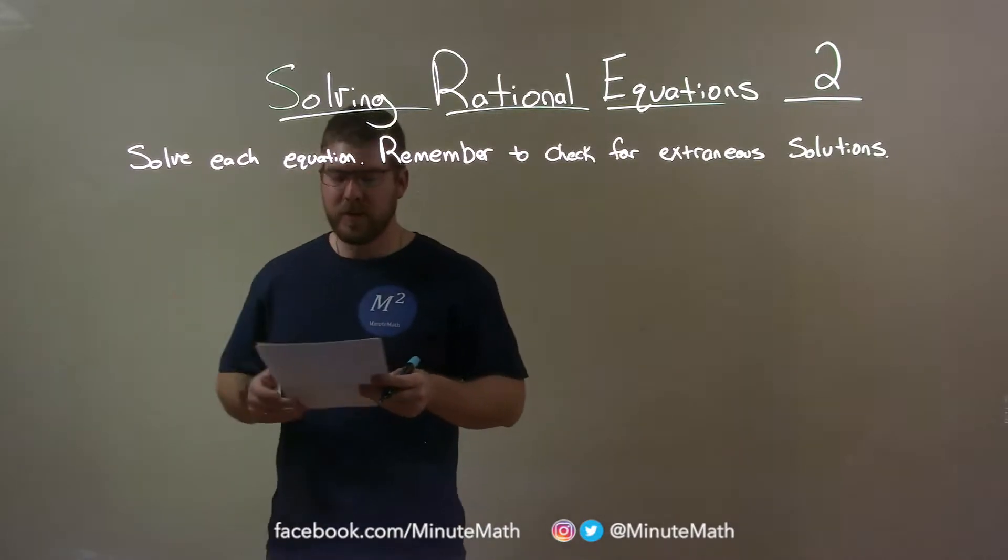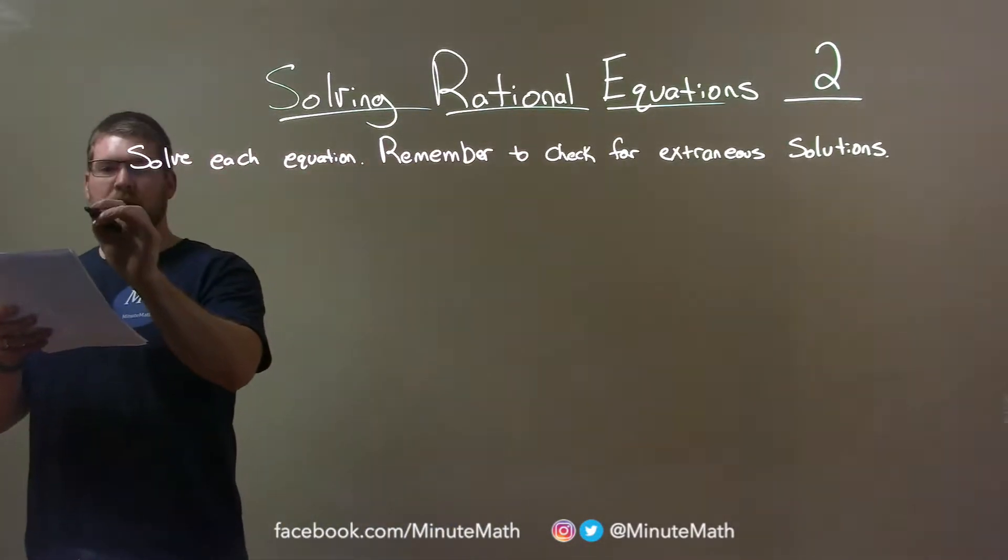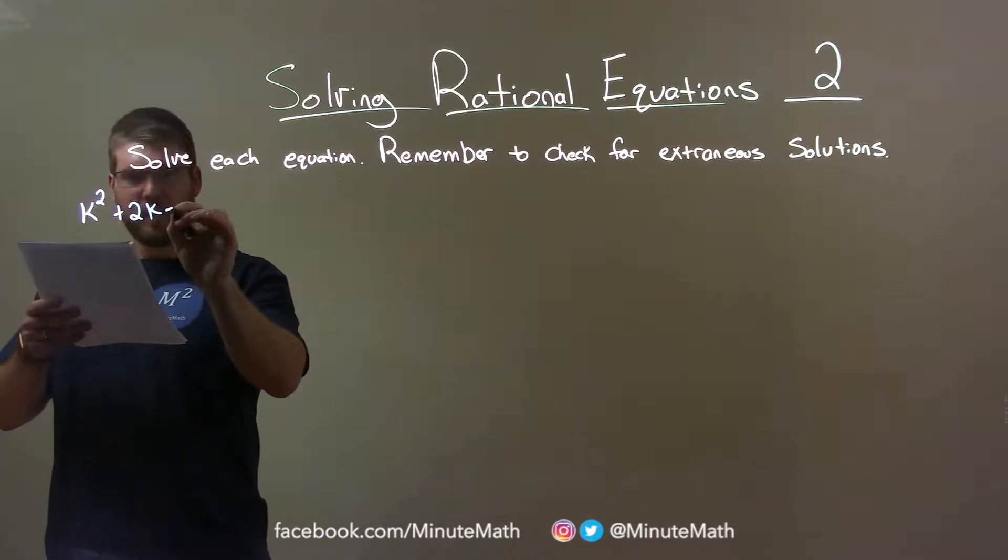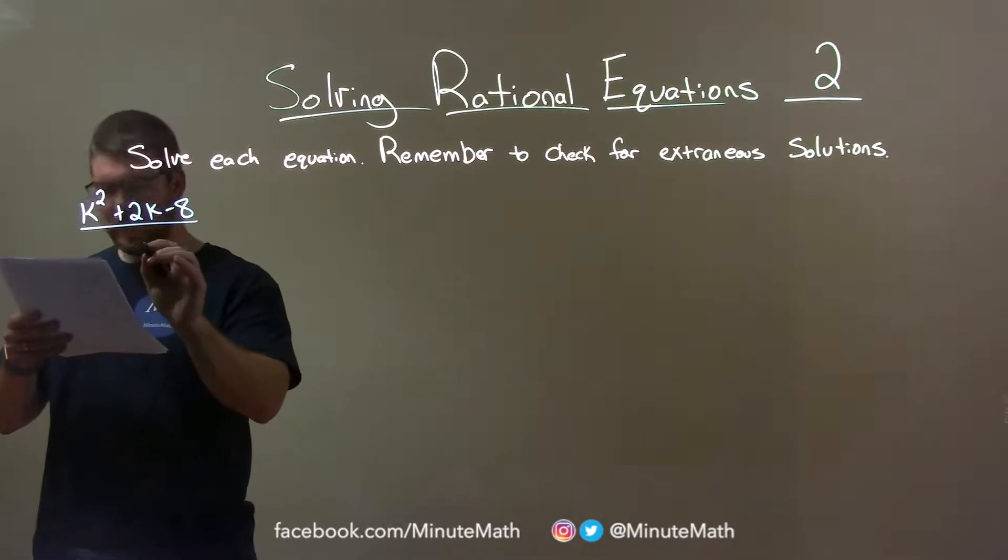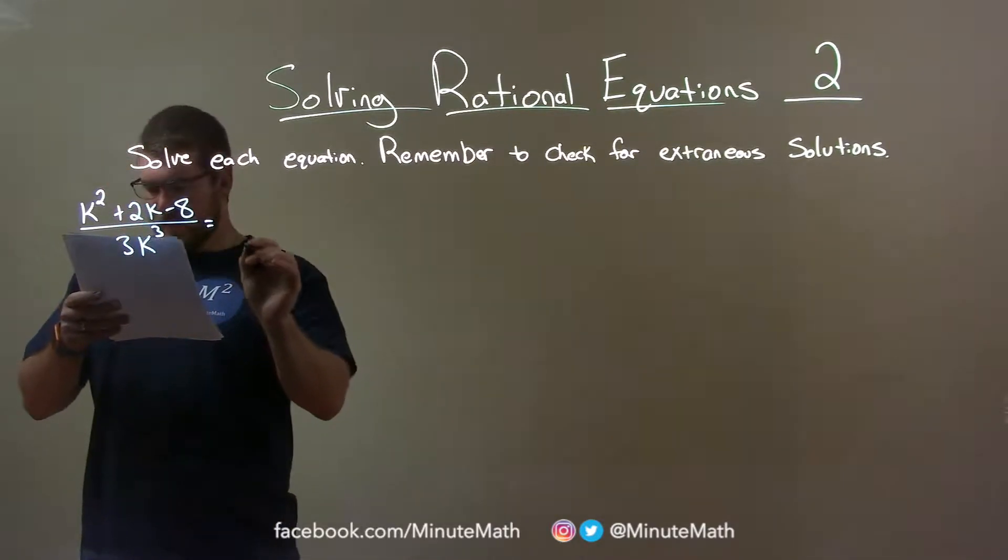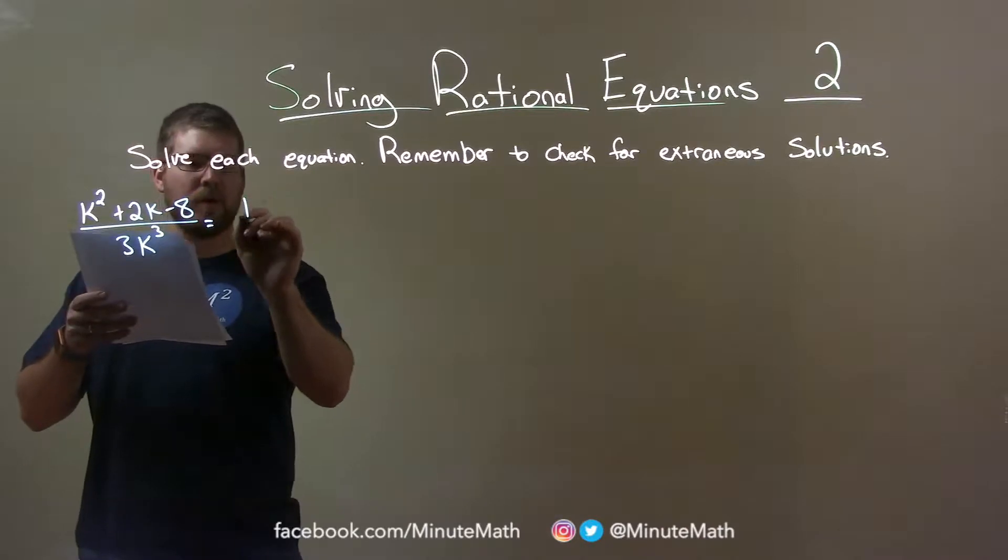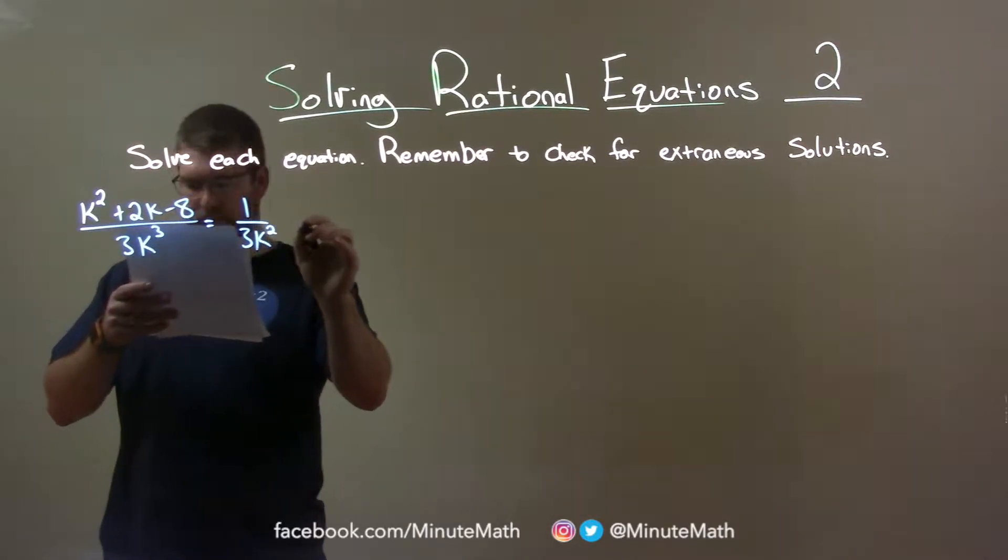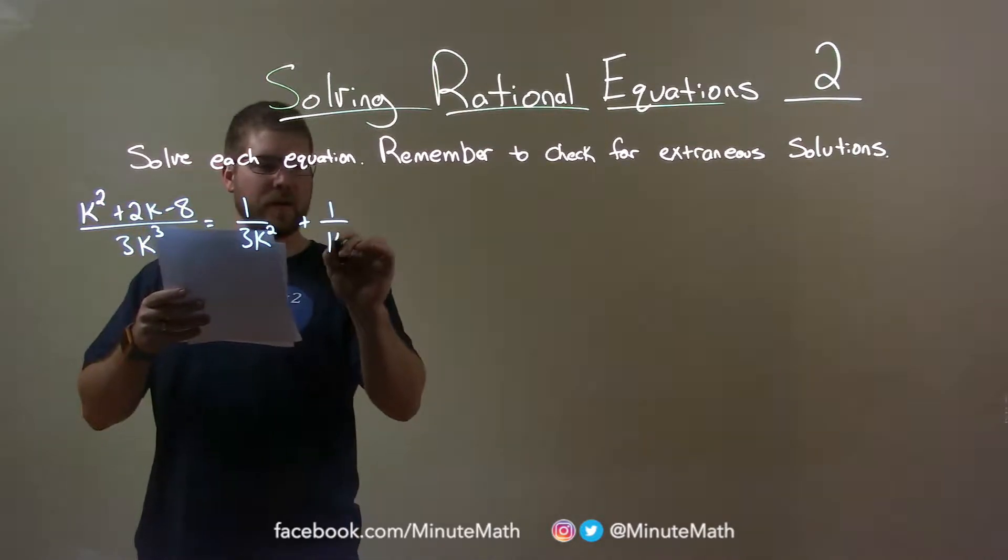Solve each equation and remember to check for extraneous solutions. So if I was given this problem: k squared plus 2k minus 8 over 3k to the third power, and that's going to be equal to 1 over 3k squared plus 1 over k squared.